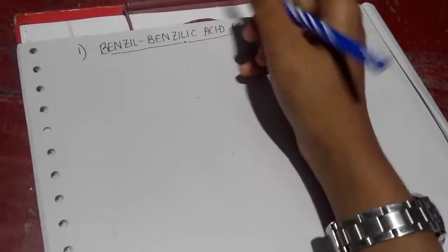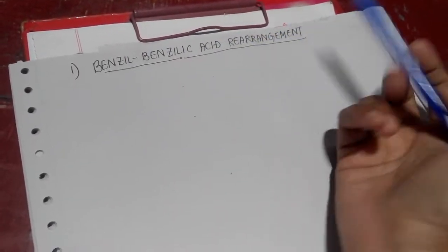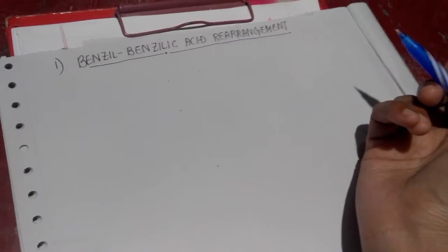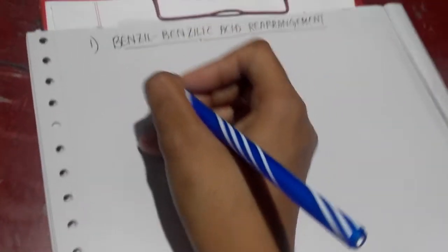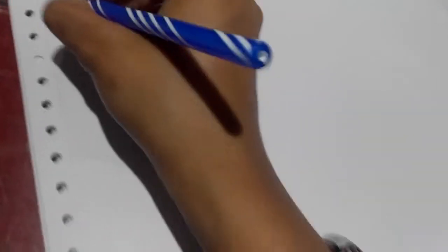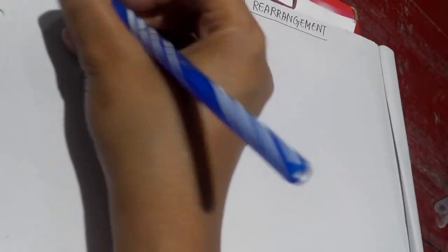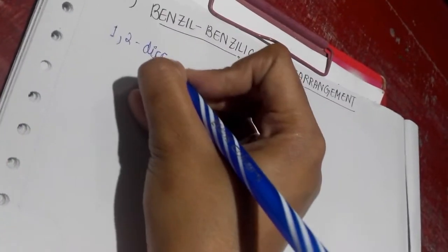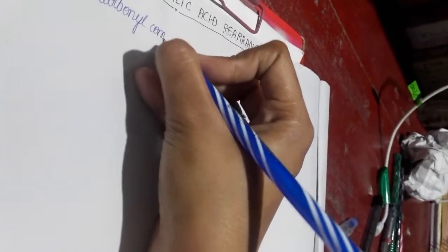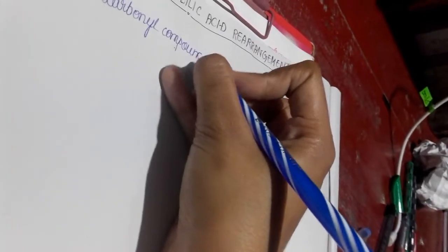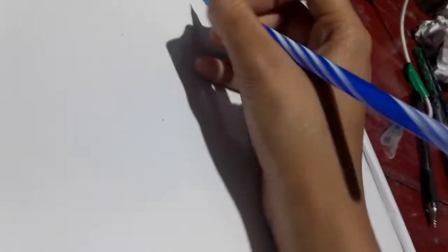Okay, so hi. Today I'll be explaining the name reaction of benzilic acid rearrangement. So basically this is the name reaction and for this we actually need to have as a substrate a 1,2-dicarbonyl compound.